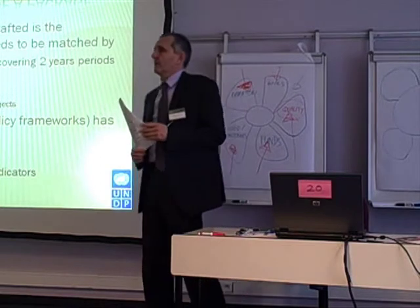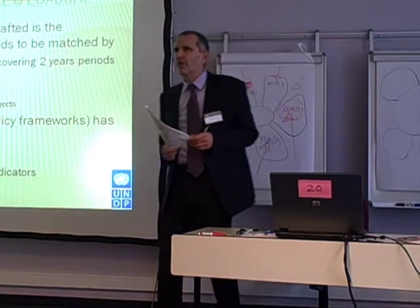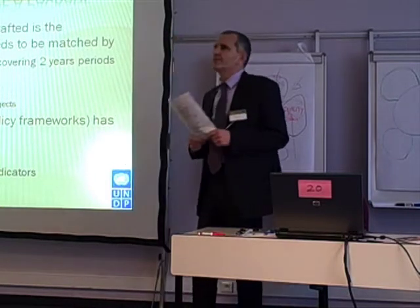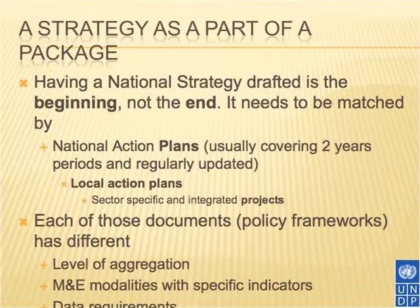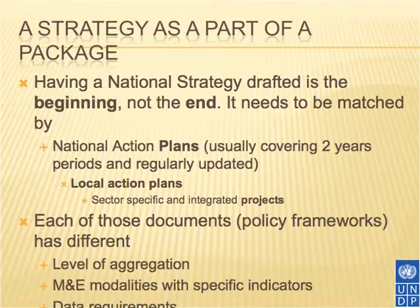The second important issue worth considering: we are talking about assessing national strategies for Roma inclusion, but we tend to forget that the strategy is just part of a broader package. Behind a strategy there should be at least two more things: national action plans or implementation plans, which make the strategy a living organism and not just a paper document, and local action plans, because things happen at the local level. This is not the first set of strategies we have seen. I hope it will be the last cycle of strategy production, because next we need national action plans, local action plans, and behind those, sector-specific and integrated projects and programs.